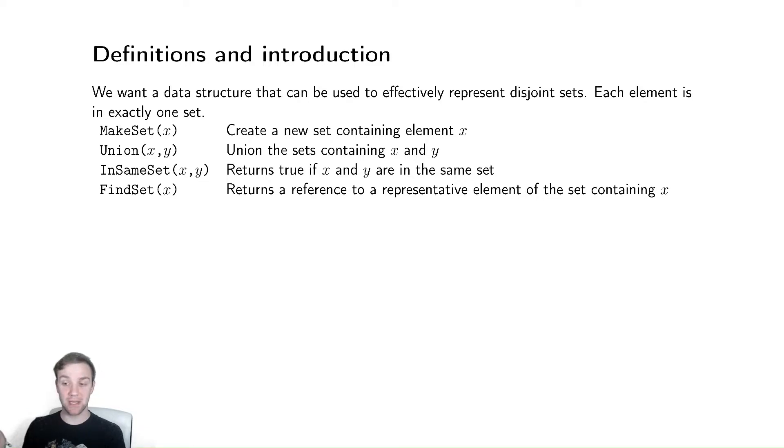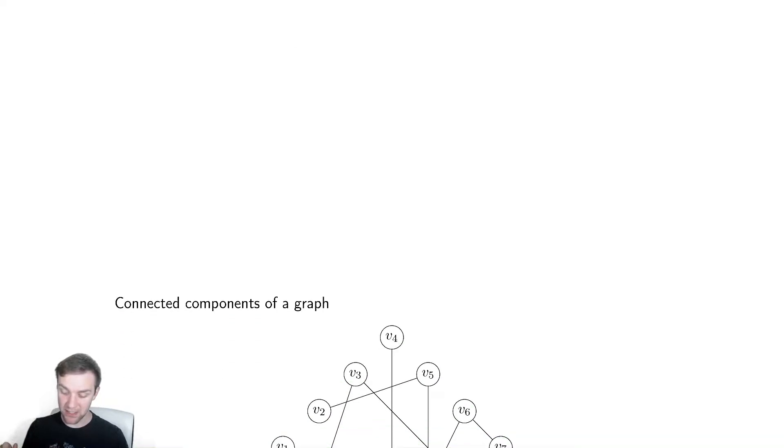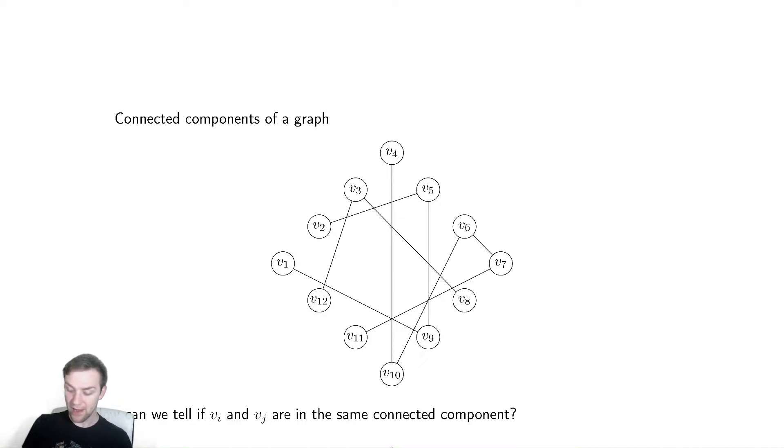What is a simple application of this? A simple application might be if we have a graph, how do we tell what the connected components are and how can we tell if two vertices are in the same connected component? I have consciously drawn the graph up there in a way that makes it difficult to determine exactly which nodes are connected. So if you're looking at this and trying to determine what are the connected components, remember connected components are the subsets of the graph that are connected.